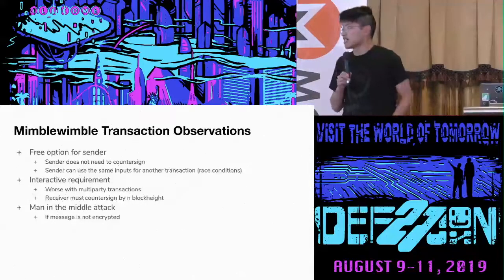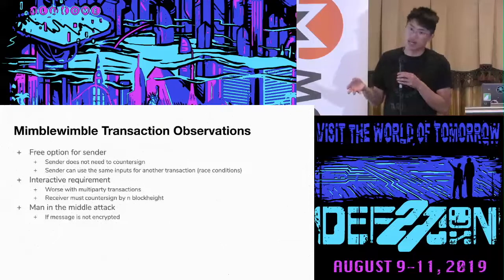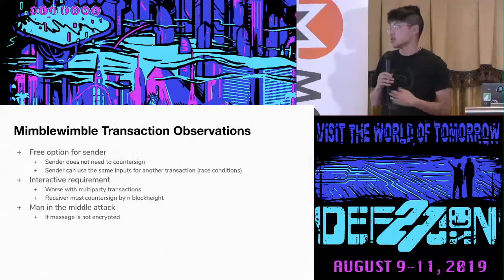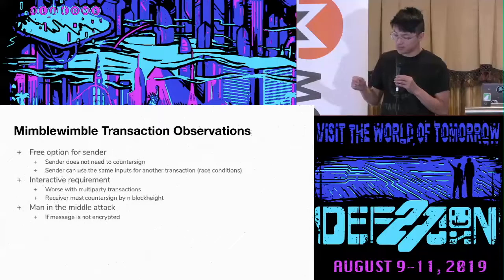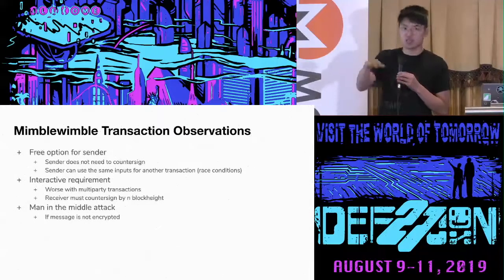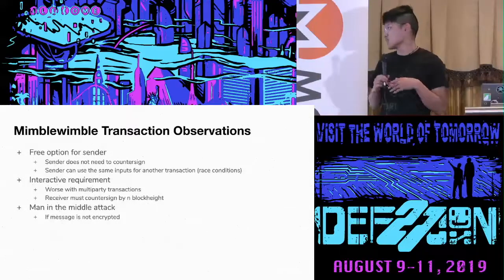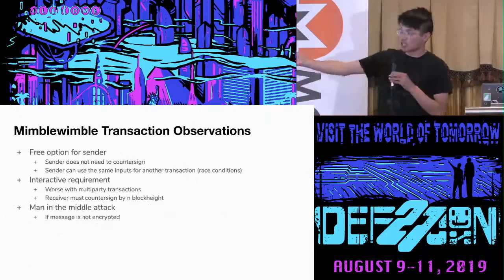There are some issues due to this interactivity. First, it's a free option for the sender: Alice could send a transaction to Bob, get a message back, and decide she didn't want to send the money - Bob just waits for money that never comes. The sender doesn't have to countersign, which gives a free option. Something more interesting - which could be considered a feature - is that the sender can actually create a single message for multiple individuals, and whoever signs first gets the money, creating a race condition. This could be fun for airdrops.